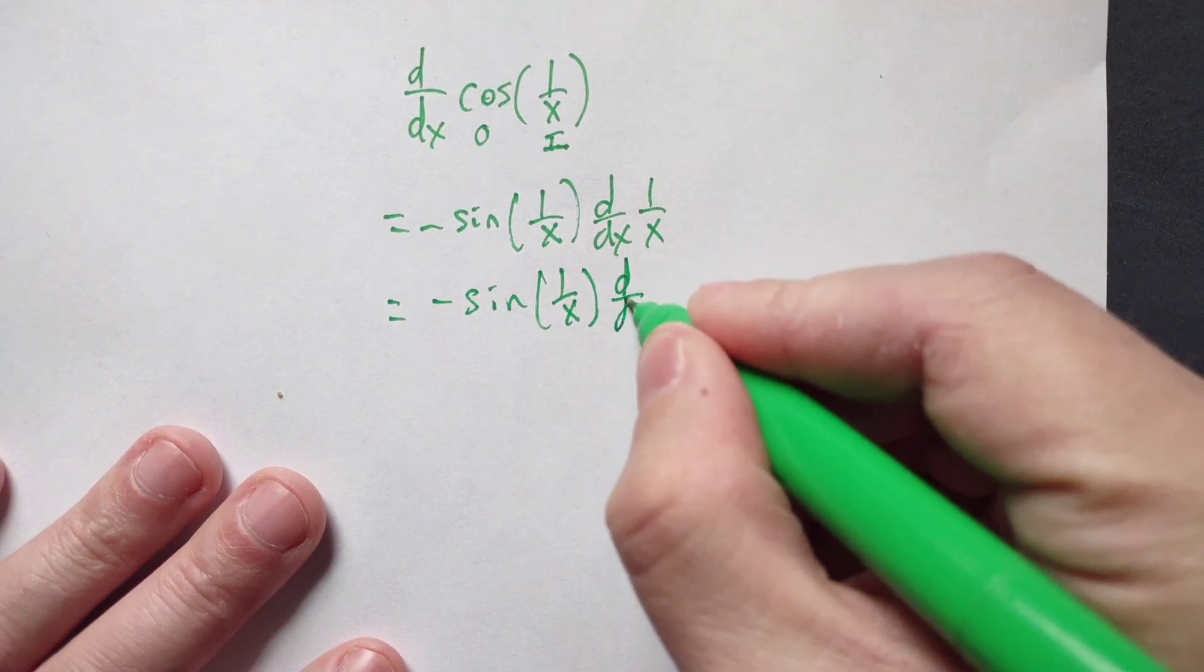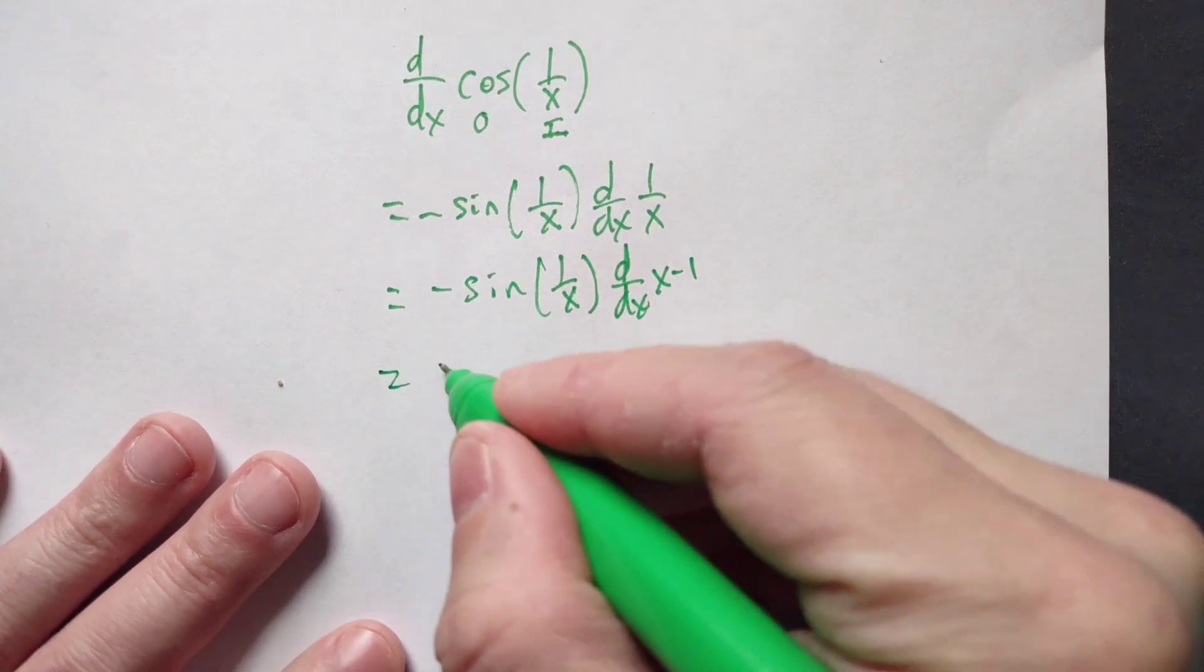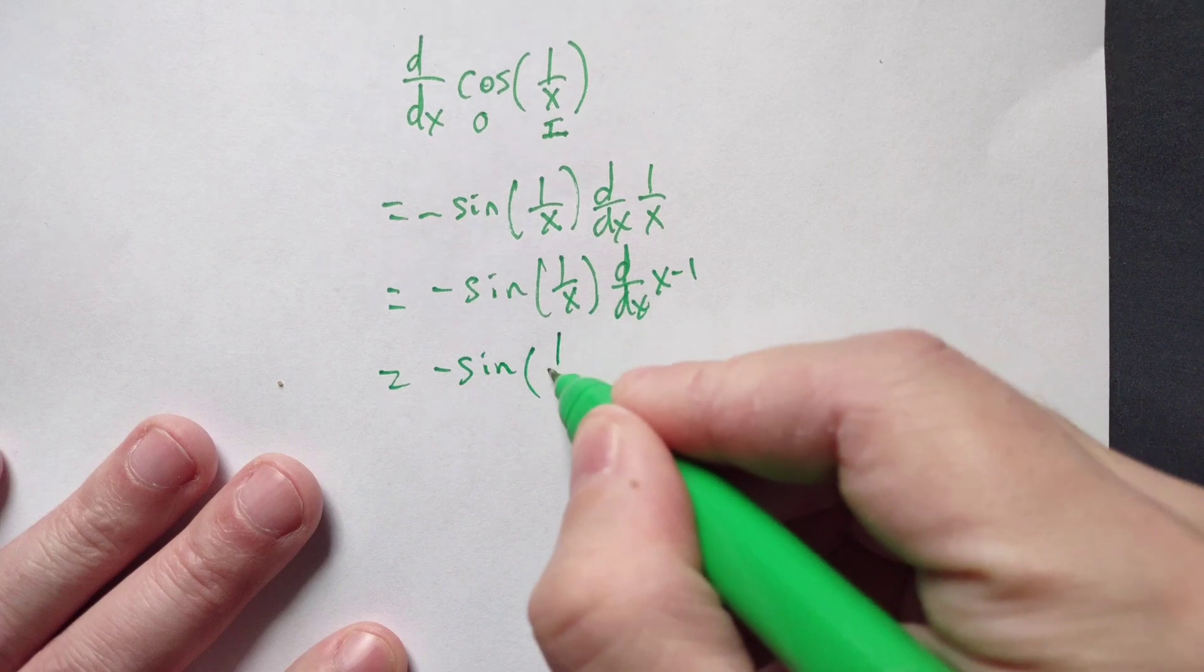You can rewrite this for yourself as follows. x to the negative first is equivalent form. And then you continue, so negative sine of 1 over x.